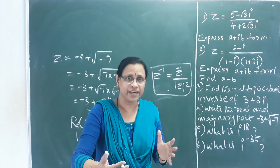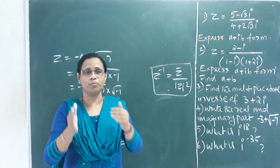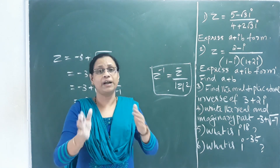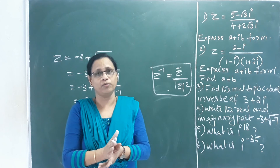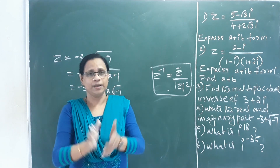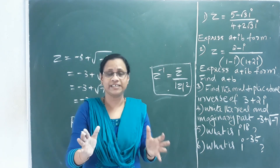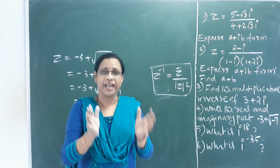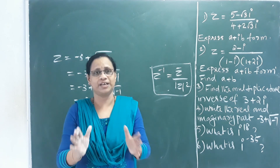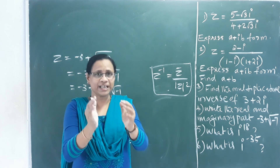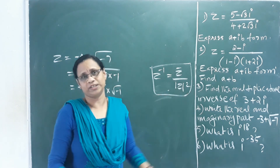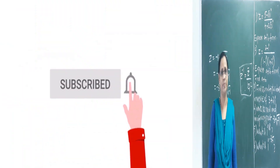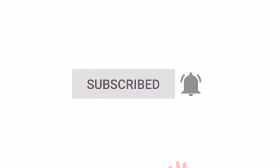In summary, this chapter covers: powers of i, modulus, conjugation, multiplicative inverse, and expressing complex numbers in standard form z = a + ib. Thank you.